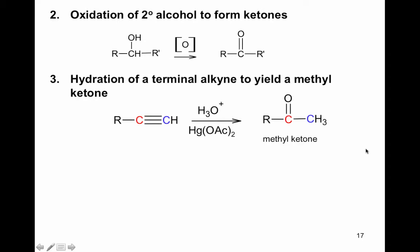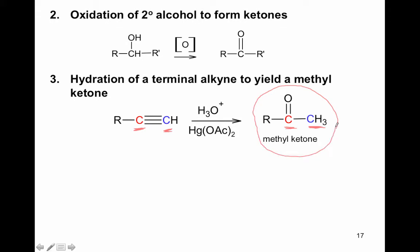The third reaction is the hydration of a terminal alkyne to yield a methyl ketone. Terminal means the triple bond is on the end. The reagents above and below the arrow include HgSO4—mercury—and you need to memorize these. The carbon in red remains the same carbon in the product; the blue carbon becomes the methyl part. This methyl ketone is a functional group you need to add to your list.